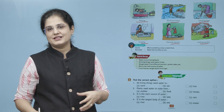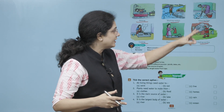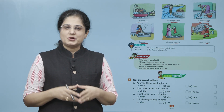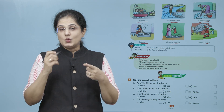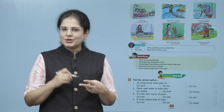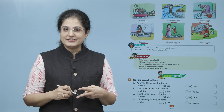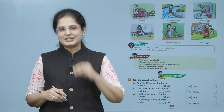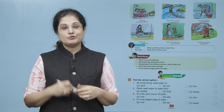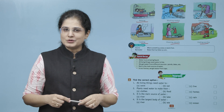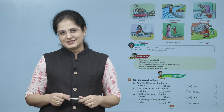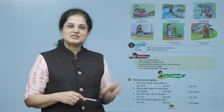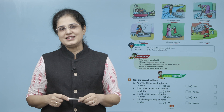To put out fire — agar kahin aag lag jaye, usse bujhane ke liye bhi paani istamal karte hai. Quick recap: Water is an amazing liquid. All living things need water to live. We get water from different sources — ponds, lakes, etc. Rain is the main source of water. In our homes, we get water from taps. I hope this chapter is clear to all and answering questions based on this chapter will now be easy.